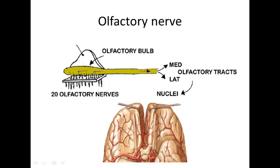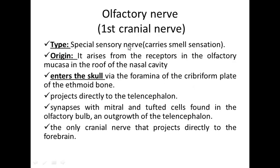So, regarding the olfactory nerve: its type is special sensory, carrying smell sensations. It originates from olfactory receptors present in the roof of the nasal cavity. It enters the skull via the cribriform plate of the ethmoid bone. It then forms the olfactory bulb, which gives rise to the olfactory tract, which reaches the olfactory cortex.